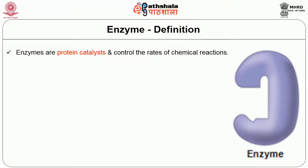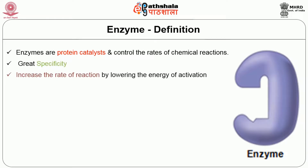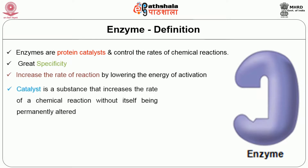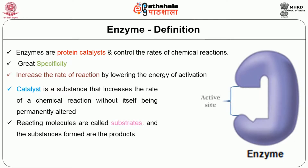Enzymes are protein catalysts that control the rates of chemical reactions. They are of great specificity, meaning an enzyme is very specific to a particular reaction. Enzymes increase the rate of reaction by lowering the activation energy required for the biochemical reaction. A catalyst is a substance that increases the rate of chemical reaction without itself being permanently altered. The reacting molecules are called substrates and the substances formed as a result of enzymatic action are called products. The enzyme has a specific site called the active site, made up of a specific set of amino acids.